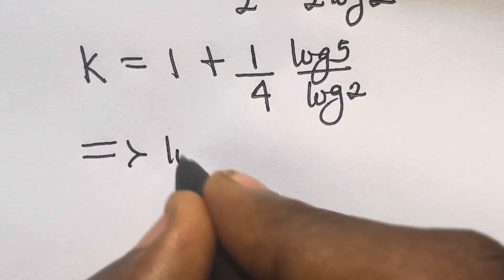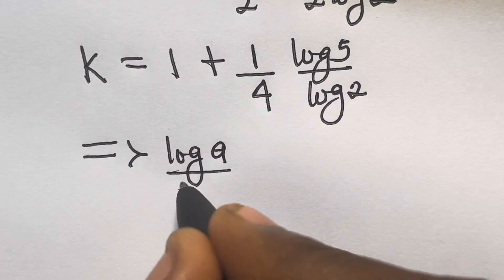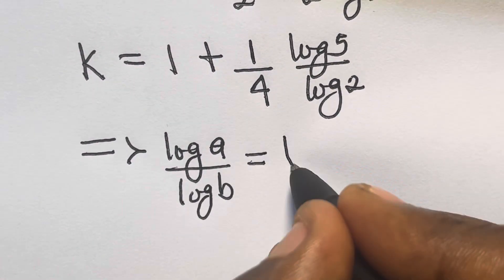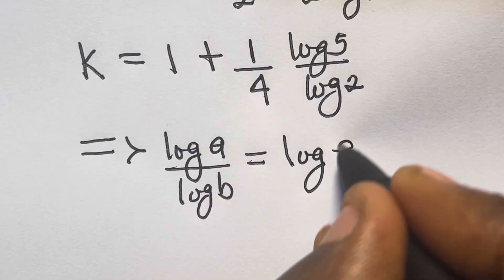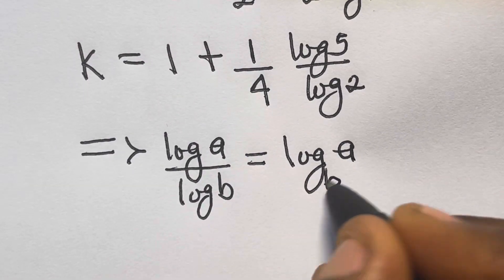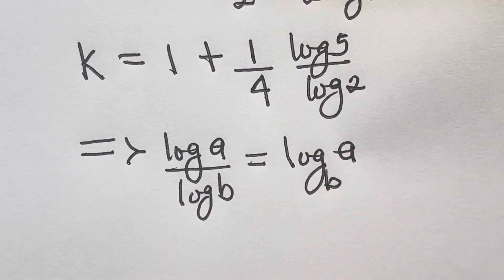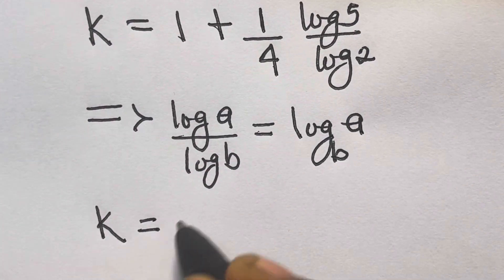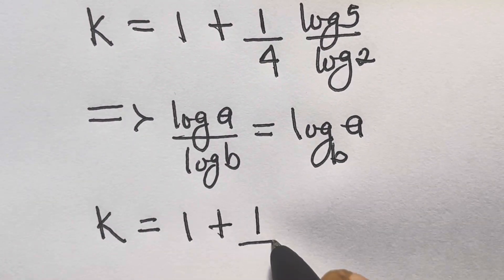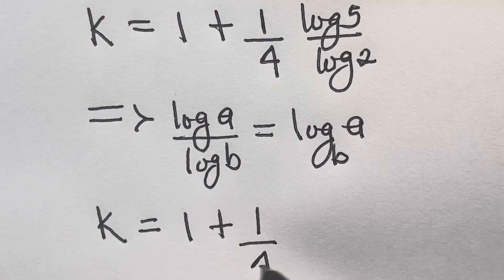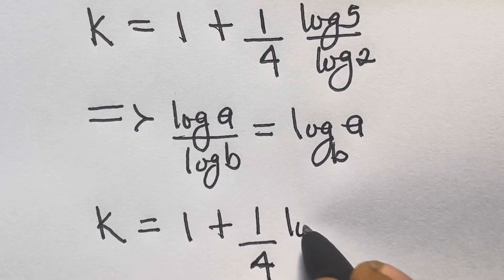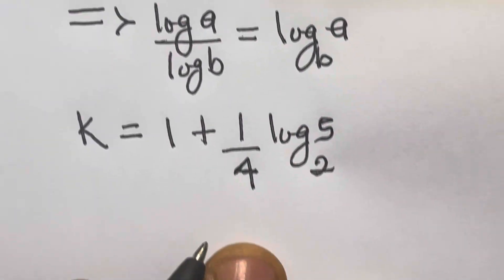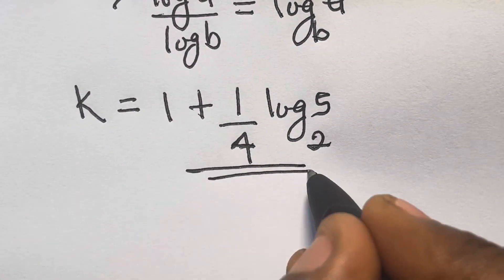Recall that if you have log a divided by log b, this equals log a in base b. Applying this, we have k equals 1 plus (1/4)·log₂5. So this is the value of k.